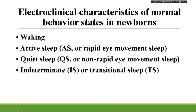In neonates, we need to understand behavioral state electroclinical characteristics. The states include: waking state, active sleep (also called rapid eye movement sleep), quiet sleep (non-rapid eye movement sleep), and intermediate or transitional sleep, which can be seen in near-term newborns.